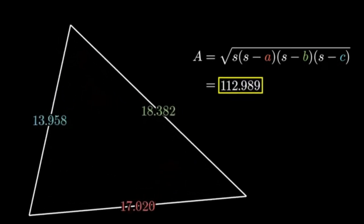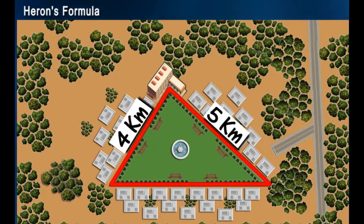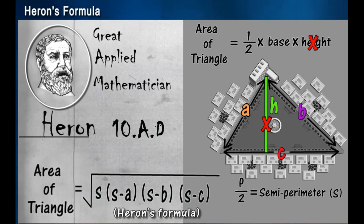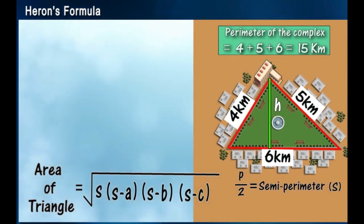Area of the Triangle, let's calculate! With Heron's formula, it's so great. Area equals square root of S into S minus A, S minus B, S minus C. Hooray!